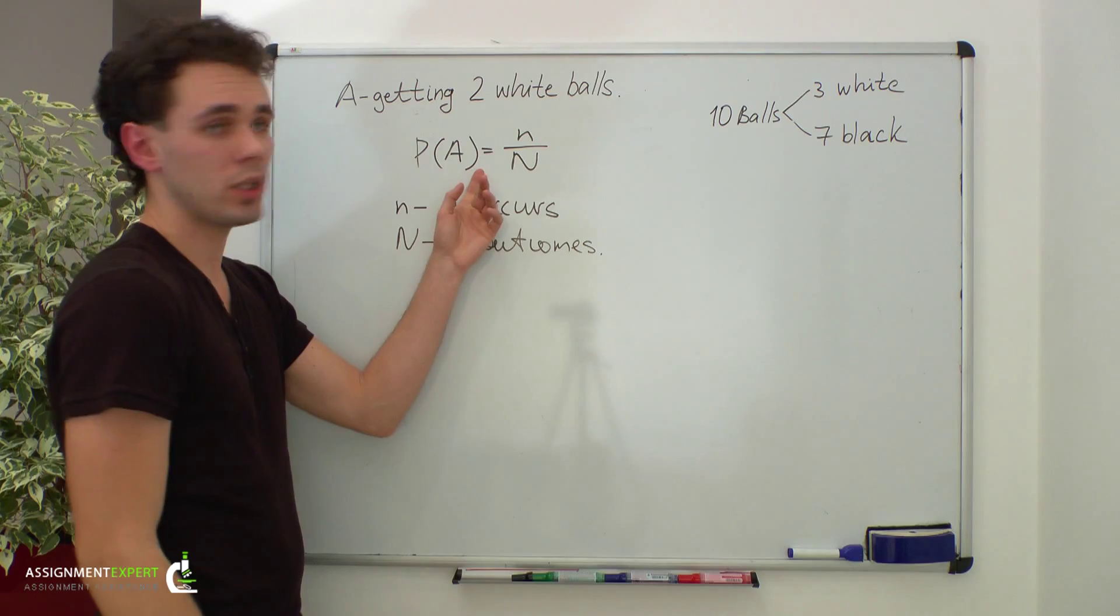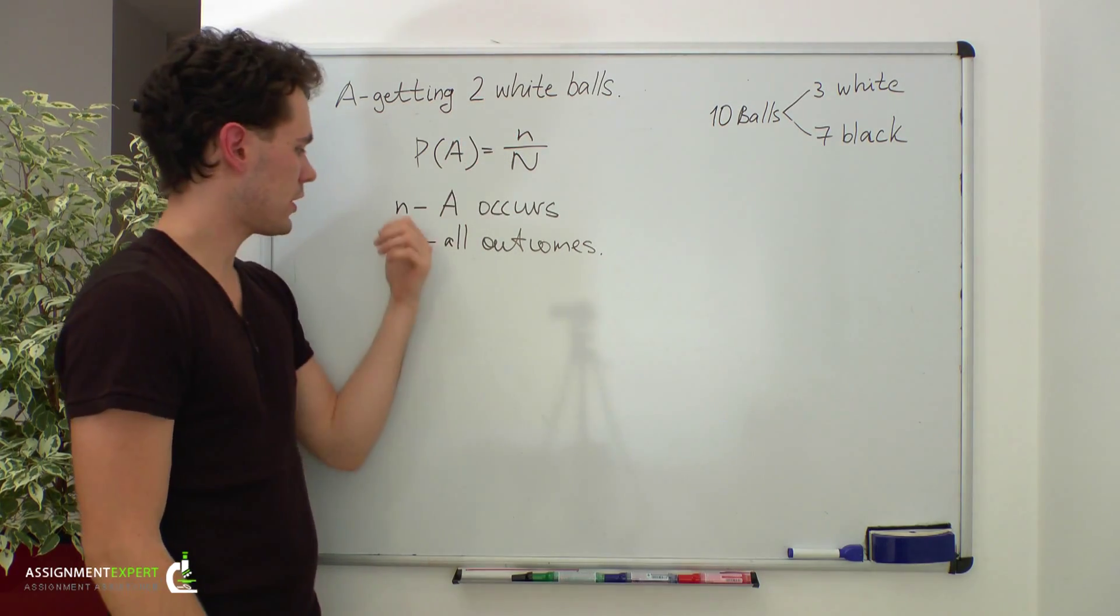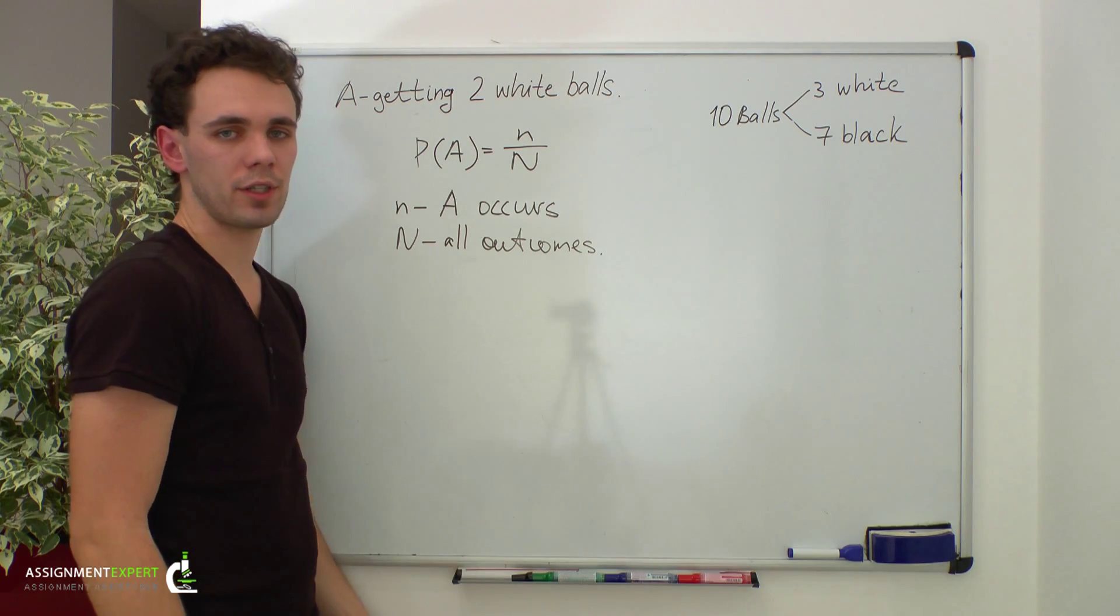We will use this formula to calculate the probability of event A, but first we need to define small n and capital N for our example.